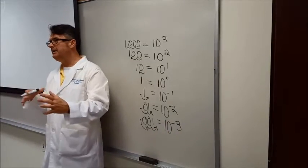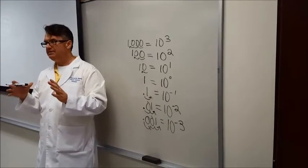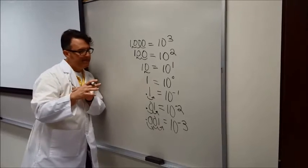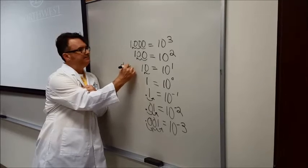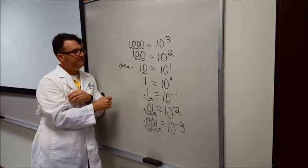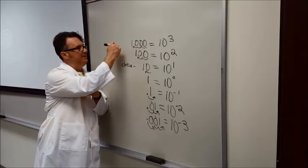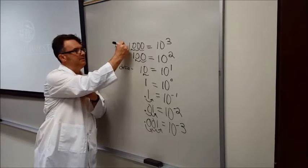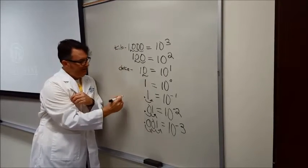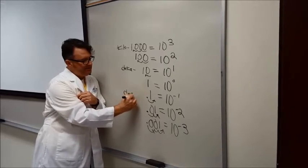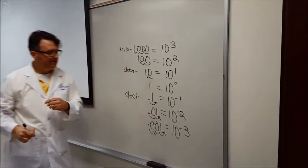Okay, now here's where I want to kind of link this into your metric system. 10 to the 1 is deca. 10 to the 3rd is kilo. 10 to the minus 1, do you know what this one is? Say it out loud. Deci.